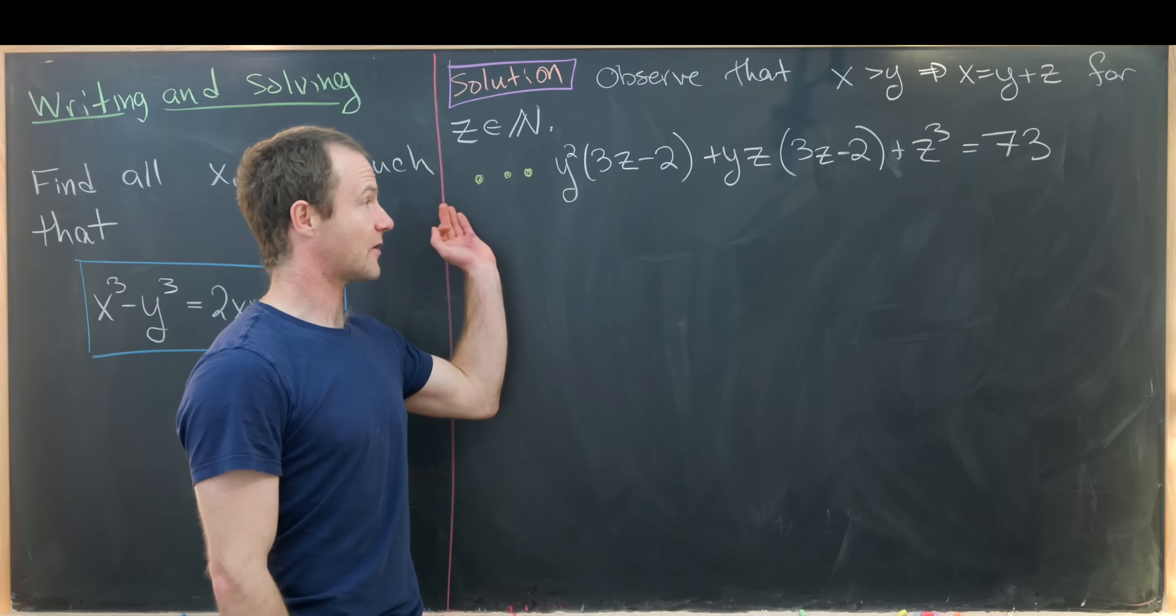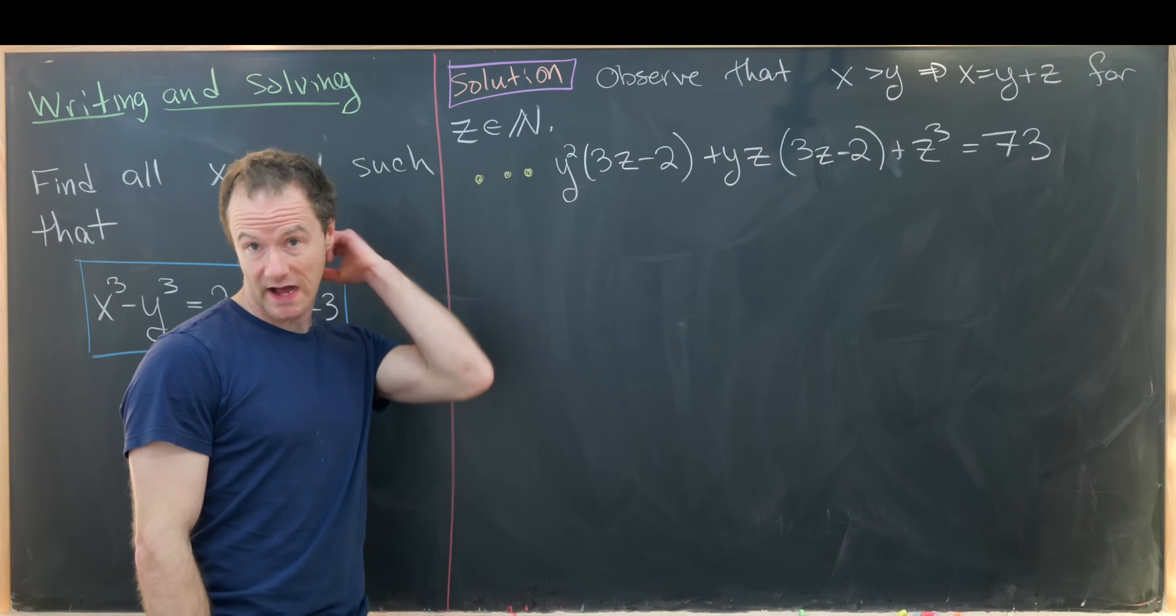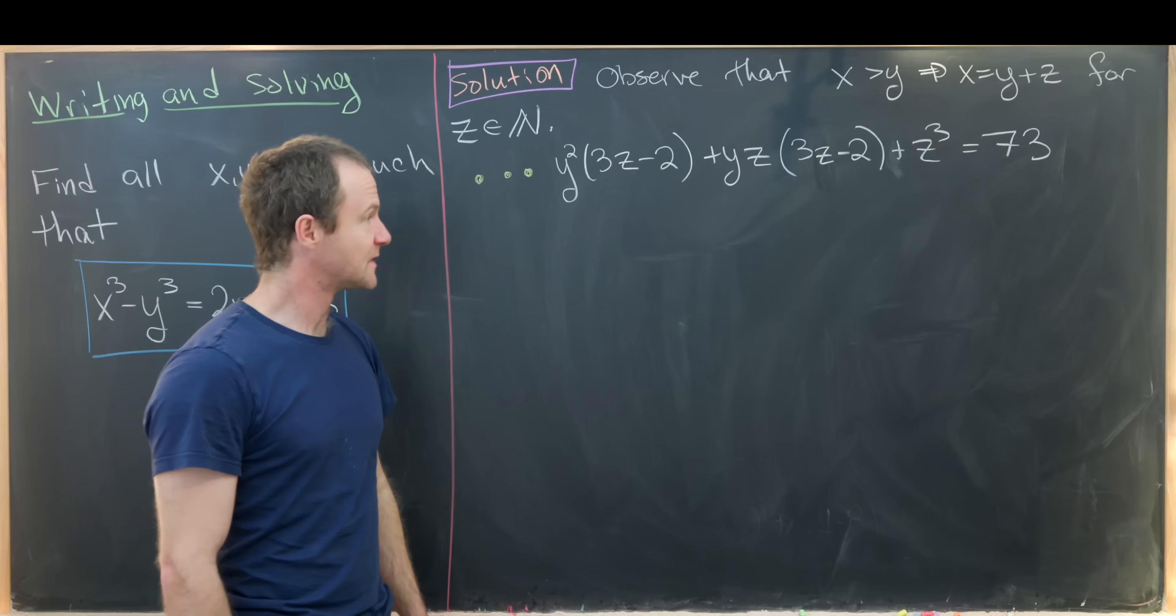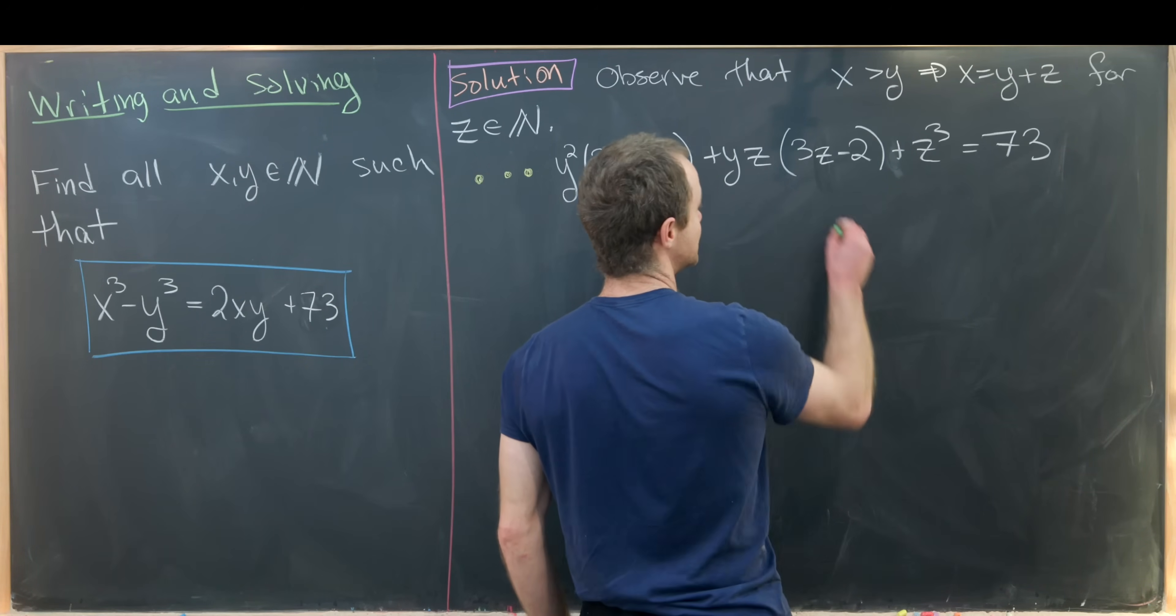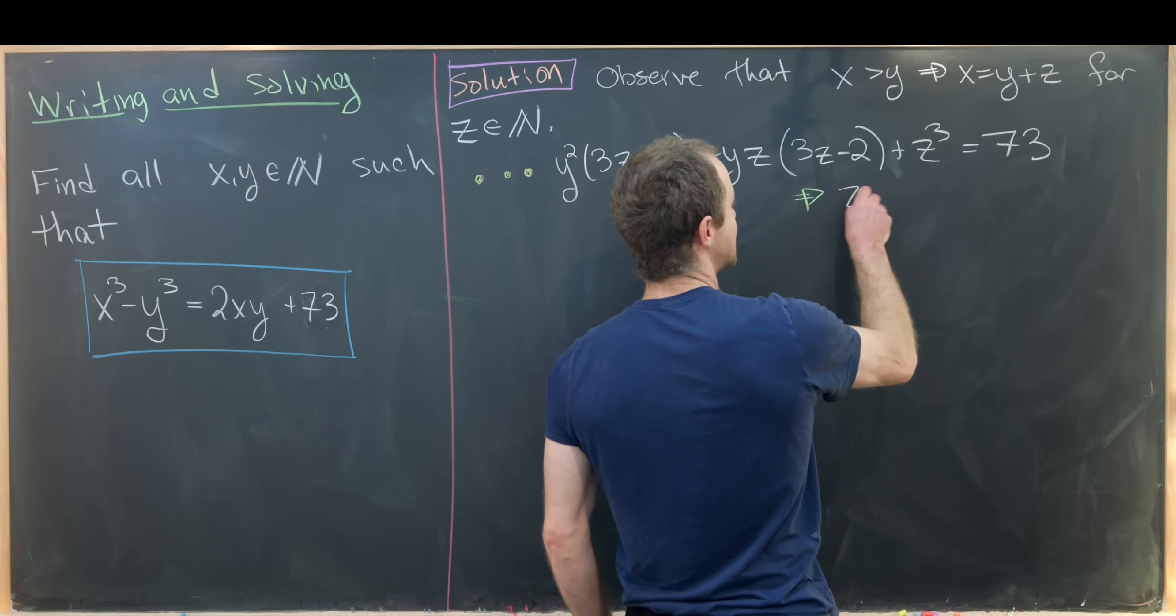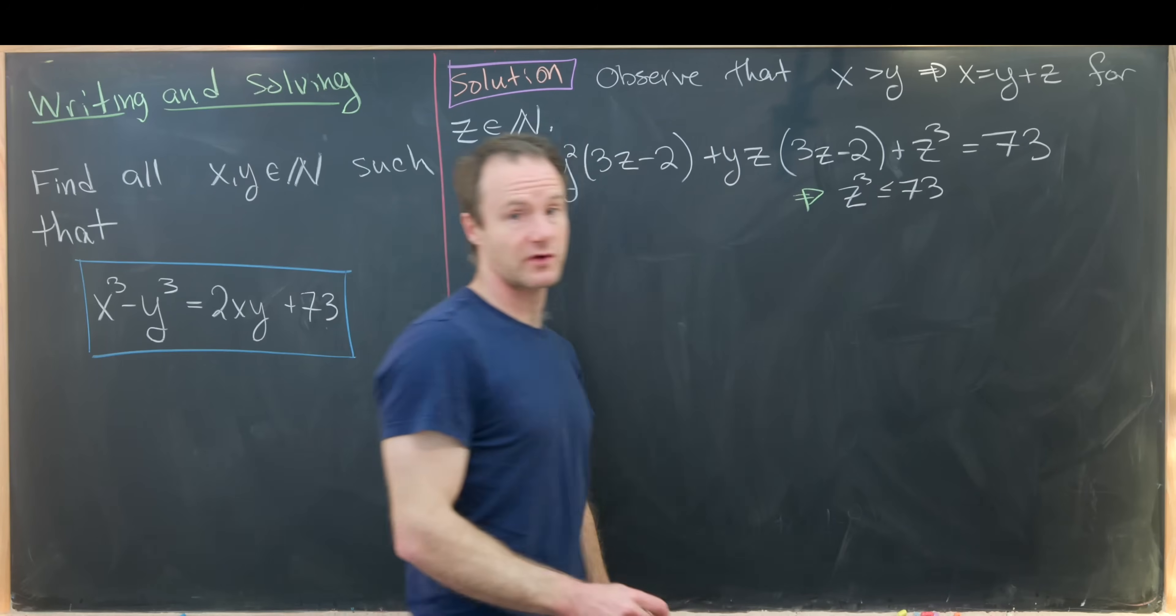Let's recall that we made the observation initially that x had to be bigger than y, so that means we could write x as y + z for a natural number z. And then from there we came up with this equation in y and z.